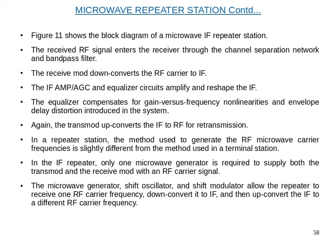In a repeater station, the method used to generate the RF microwave carrier frequencies is slightly different from the method used in a terminal station. In the IF repeater, only one microwave generator is used to supply both the transmode and the receive mode with an RF carrier signal. The microwave generator, shift oscillator, and shift modulator allow the repeater to receive one RF carrier frequency, down-convert it to IF, and then up-convert the IF to a different RF carrier frequency.